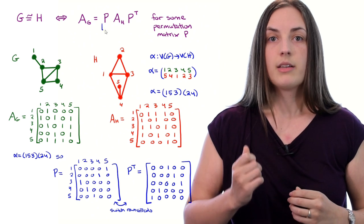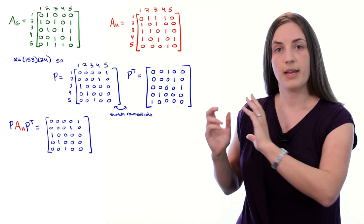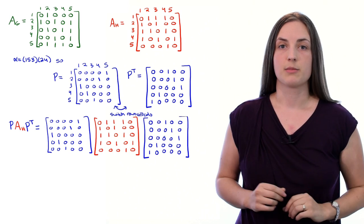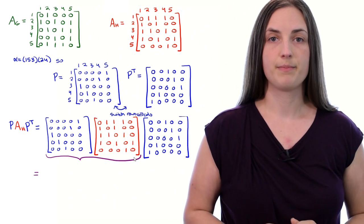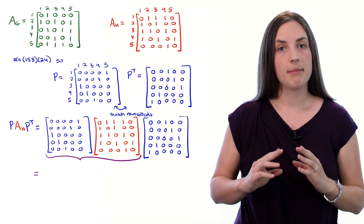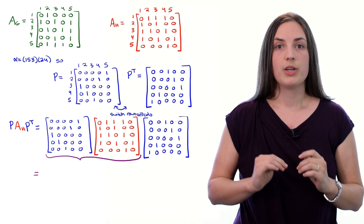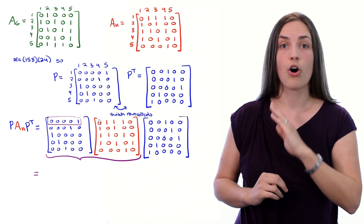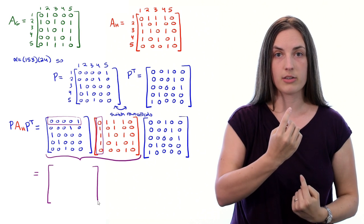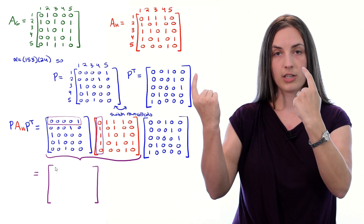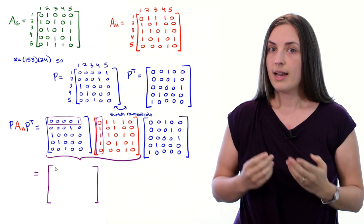Our next step is to take a look at the product we get when we take P times A_h times P transpose. Let me copy and paste our matrix P and copy and paste our matrix A_h and also P transpose. Now because multiplication of matrices is associative, I'm just going to go ahead and multiply the first two together. You've probably seen matrix multiplication before, but let me just remind you that if you're looking for the entry in row 1 column 1 of the product, what you need to do is look at row 1 of the first matrix and column 1 of the second matrix. You look along that row and column and you take the dot product. What that means is that you multiply corresponding entries and keep doing that, multiplying corresponding entries, but you take the sum of all of that.